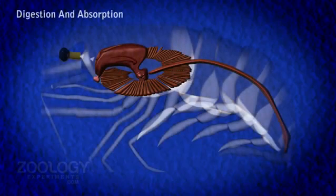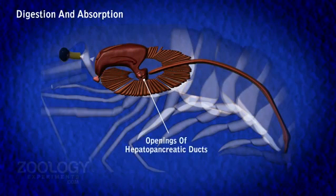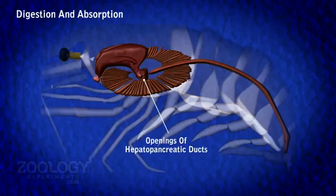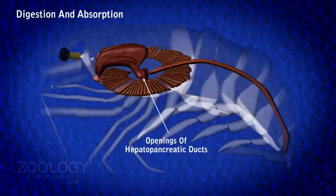Passage of food through the esophagus is facilitated by the peristaltic activity of the esophagus and the sucking action of the cardiac stomach. The enzymatic digestive secretion of the hepatopancreas flows through the two hepatopancreatic ducts into the ventral chamber of the pyloric stomach, from where it reaches the cardiac stomach and mixes with food. The cardiac stomach expands and contracts to effect the churning of food and to facilitate its digestion by the action of digestive enzymes.